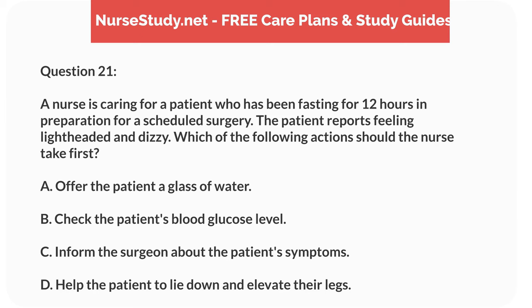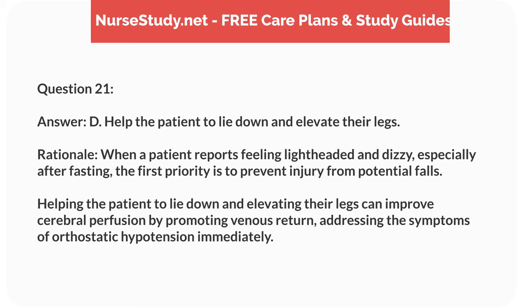Question 21. A nurse is caring for a patient who has been fasting for 12 hours in preparation for a scheduled surgery. The patient reports feeling lightheaded and dizzy. Which of the following actions should the nurse take first? A. Offer the patient a glass of water. B. Check the patient's blood glucose level. C. Inform the surgeon about the patient's symptoms. D. Help the patient to lie down and elevate their legs. Answer: D. Help the patient to lie down and elevate their legs. Rationale: When a patient reports feeling lightheaded and dizzy, especially after fasting, the first priority is to prevent injury from potential falls. Helping the patient to lie down and elevating their legs can improve cerebral perfusion by promoting venous return, addressing the symptoms of orthostatic hypotension immediately.